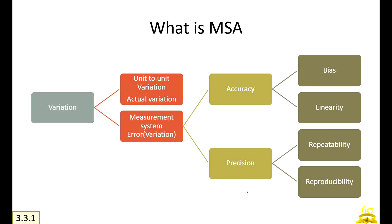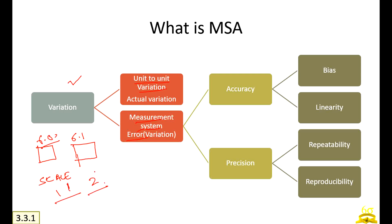In summary, MSA deals with variation. There is unit-to-unit variation — for example, two A4 papers where one measures 6.1 and another 6.0; that is part-to-part variation. There is also measurement system error variation — for instance, using two different scales where scale 1 and scale 2 may have a very small difference, perhaps a micrometer, between them. These variations are divided into accuracy errors and precision errors. Accuracy errors include bias and linearity.